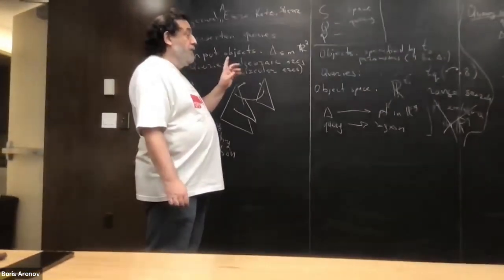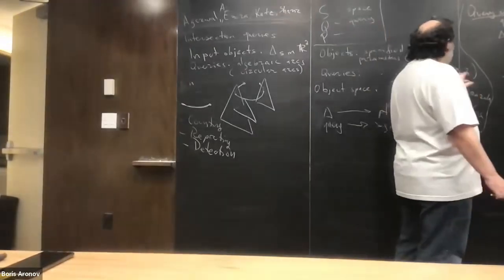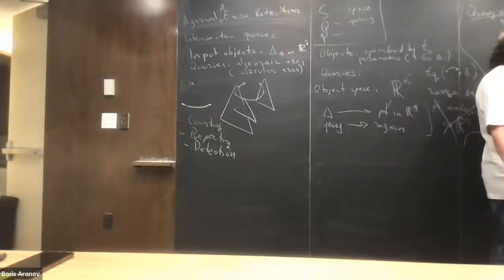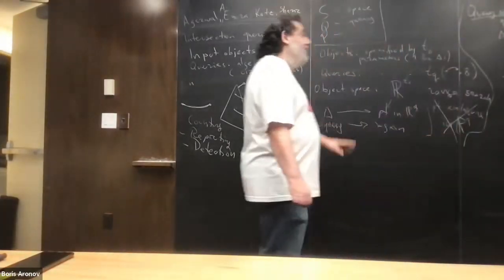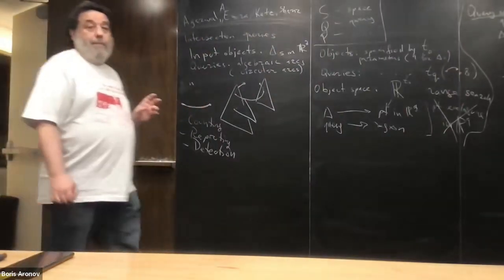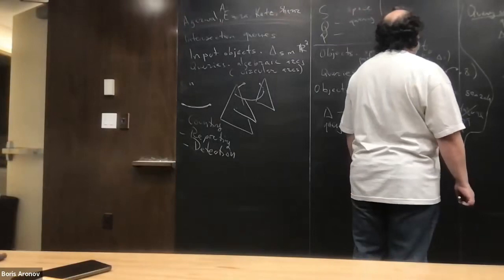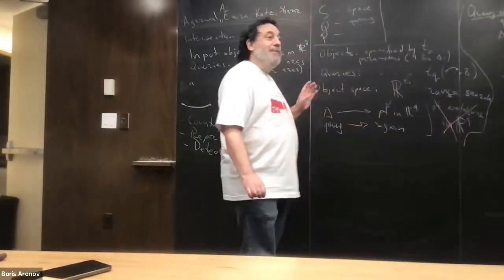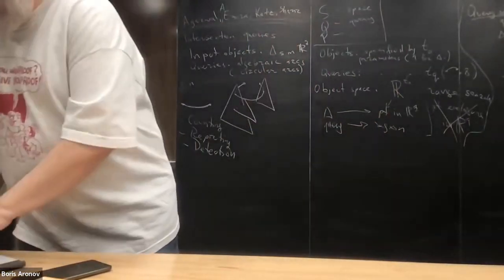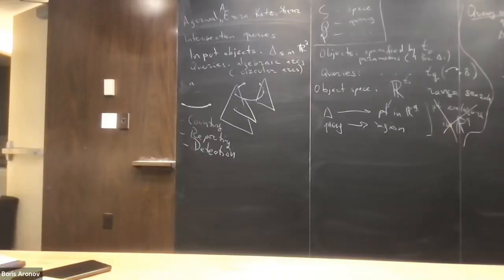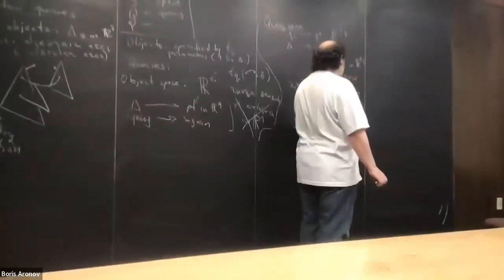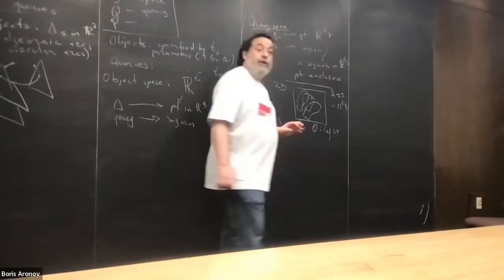Another issue that pops up is whether you can do trade-offs. This is one extreme: lots of space, very fast query. The other extreme is nearly linear space. Can you make the query sublinear and how sublinear? It's usually n to some power. I could in principle throw that stuff at you, but I think I will never get to the subject of this talk if I do.